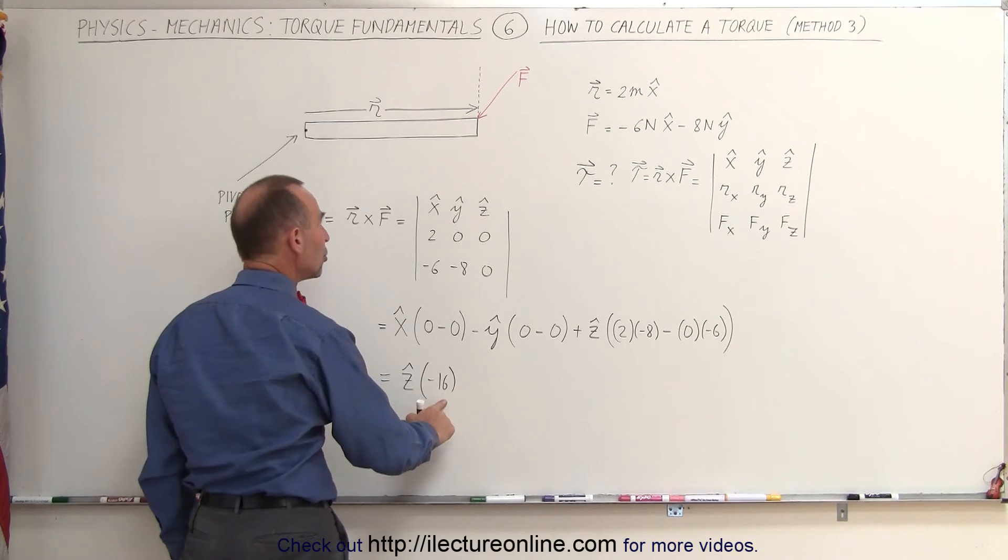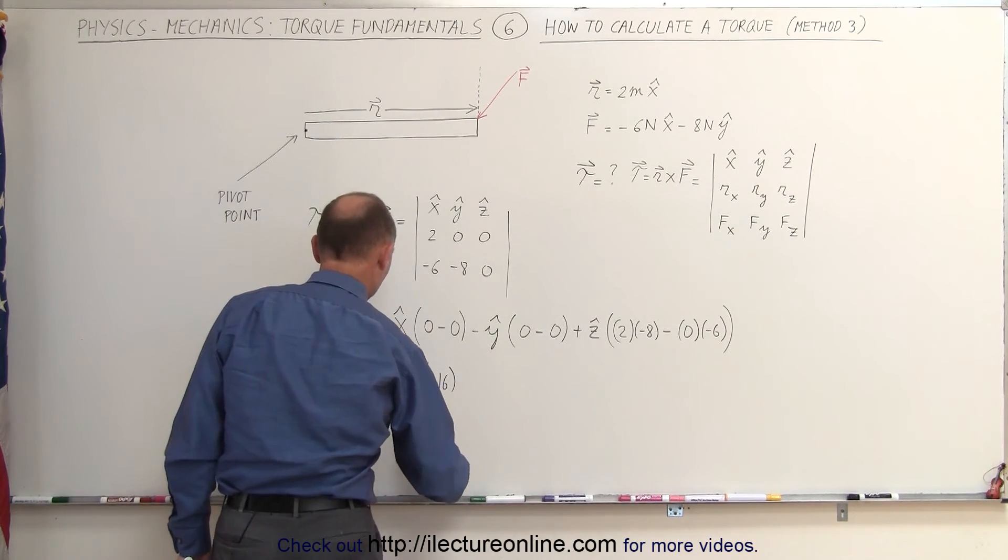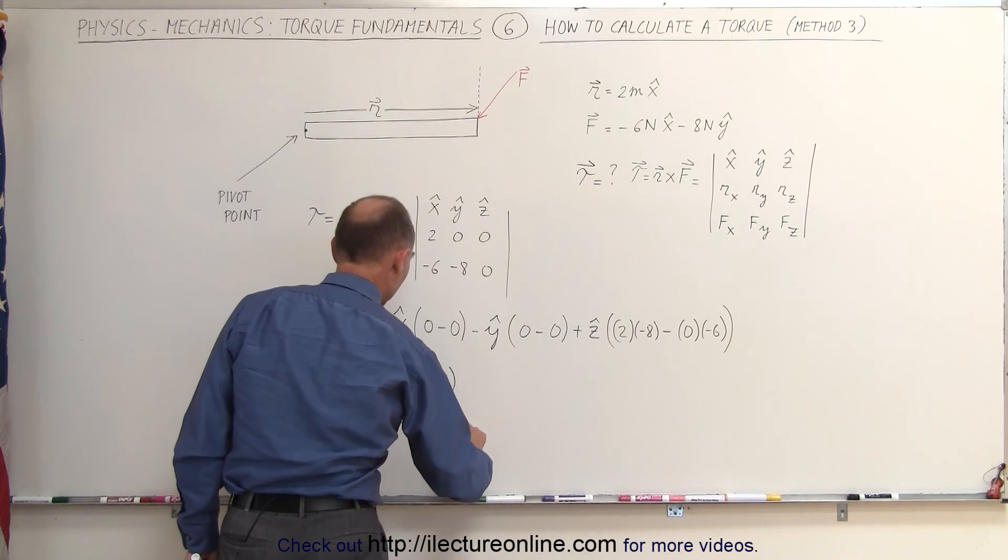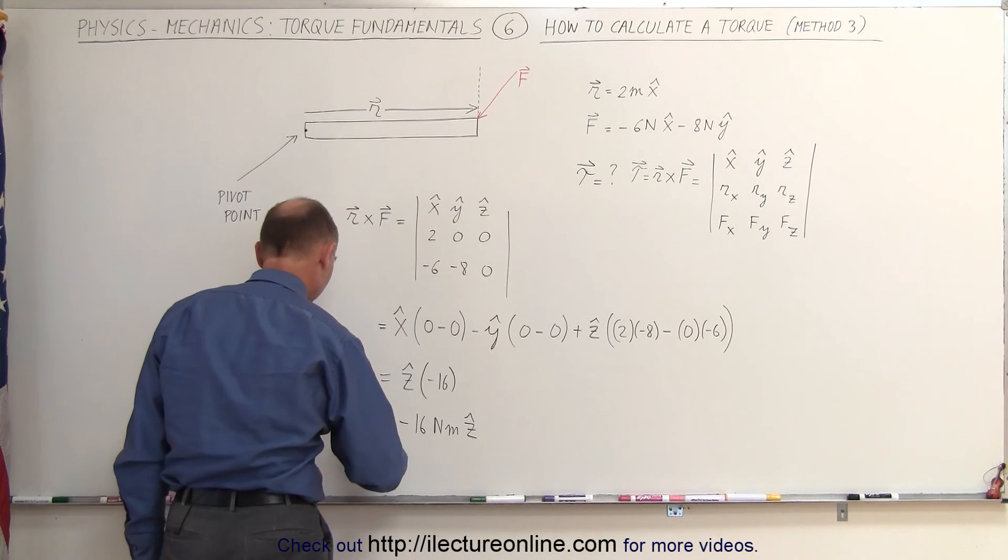And of course, we write that with the units. We note that units of torque are newton meters. So the final answer is the torque is equal to 16 newton meters in the negative z direction.